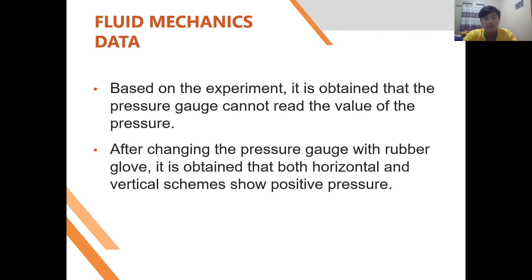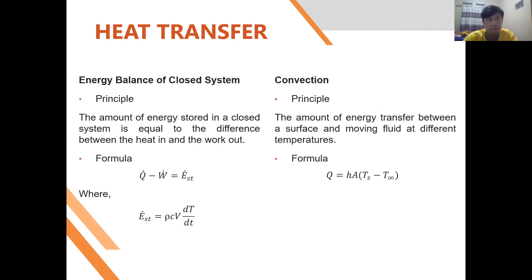From the fluid mechanics experiment data, the pressure gauge could not read the value of pressure — the reasons for this will be explained in the analysis section. After replacing the pressure gauge with rubber gloves, both horizontal and vertical schemes showed positive pressure, as the rubber gloves were observed to pop out during the experiment.